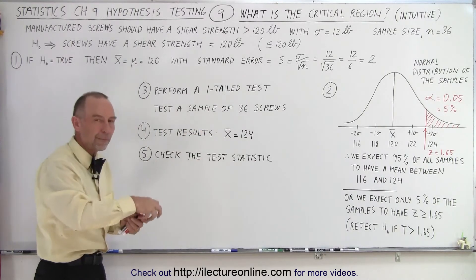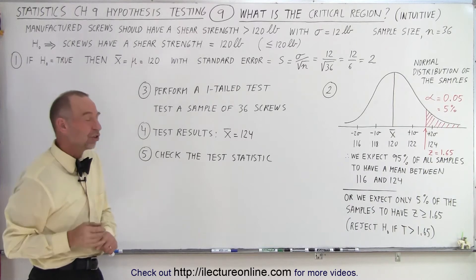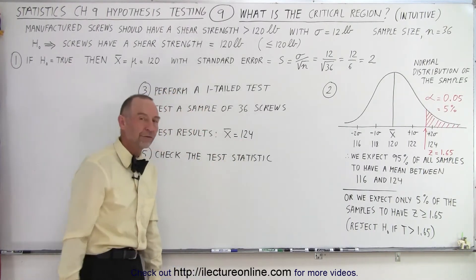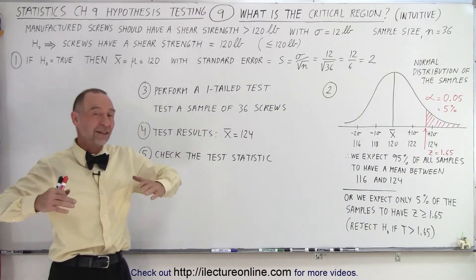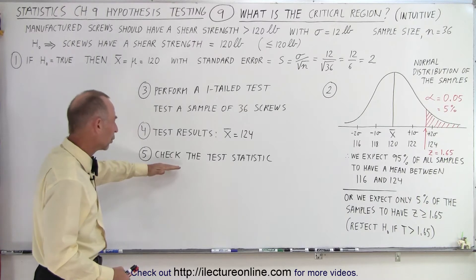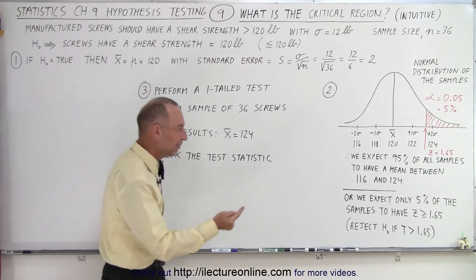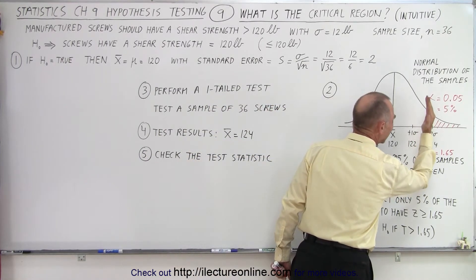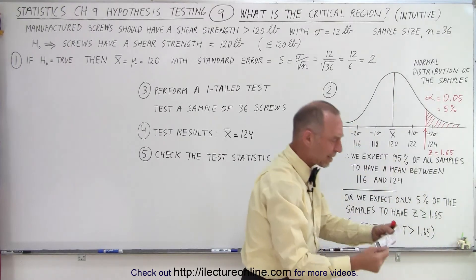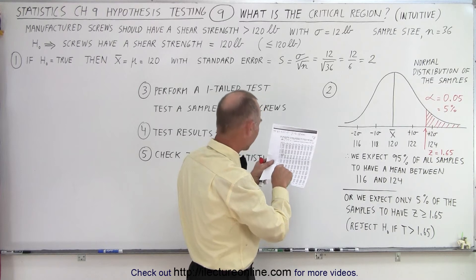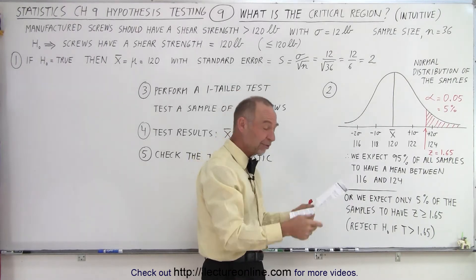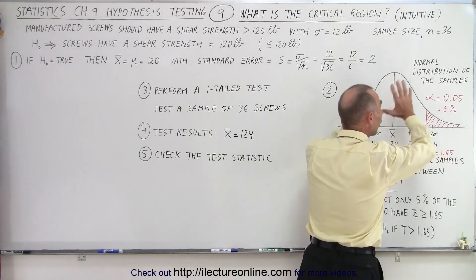So we test a sample of 36 screws. We pick out 36 randomly selected screws, test their shear strength, and let's say the average shear strength of those 36 is 124 pounds. What does that tell us about the entire population? We're going to check the test statistic. If it's greater than the Z-score of the edge of the critical region — for 5%, the Z-score is 1.65. I go to my Z-table and look for 5%, and it's 1.65. So 1.65 corresponds to 5% of all the values of the distribution.